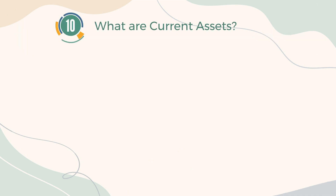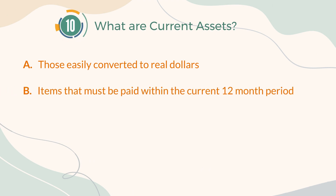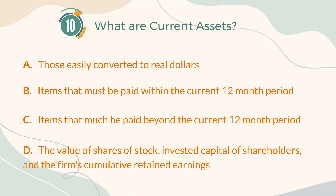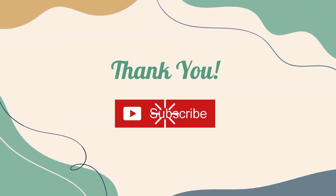Number 10. What are current assets? A. Those easily converted to real dollars. B. Items that must be paid within the current 12-month period. C. Items that must be paid beyond the current 12-month period. D. The value of shares of stock, invested capital of shareholders, and the firm's cumulative retained earnings. The correct answer is A: those easily converted to real dollars.